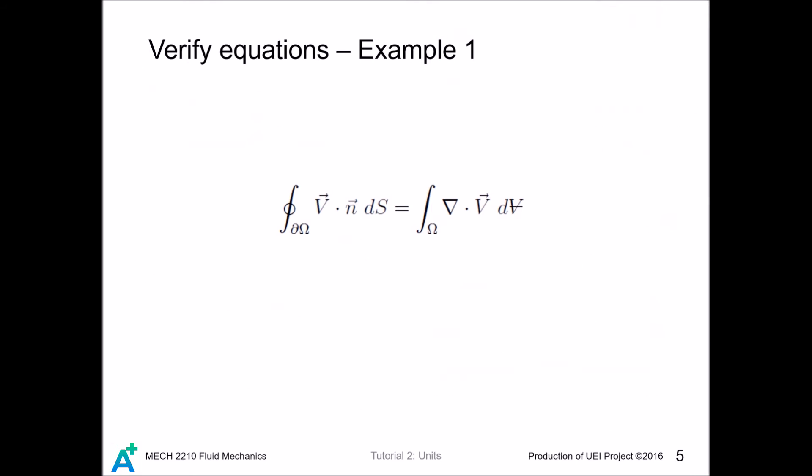Now, we can continue to discuss the third use of units. That is to verify your formula makes sense or not. Every formula shall have consistent units on both sides. Let's see if the divergence theorem that you have learned last year make sense or not. In this course, this vector V equals u v w denotes the velocity field. This dot product here can be written as v dot n equals v n cosine theta.